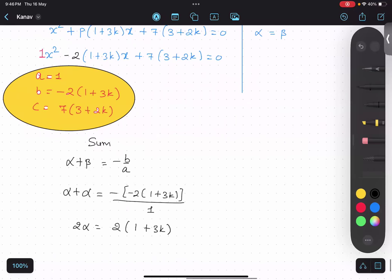So as of now I can't solve it further. So let me just focus on product part. So product as alpha into beta that is C upon A. And alpha into alpha. Alpha square.